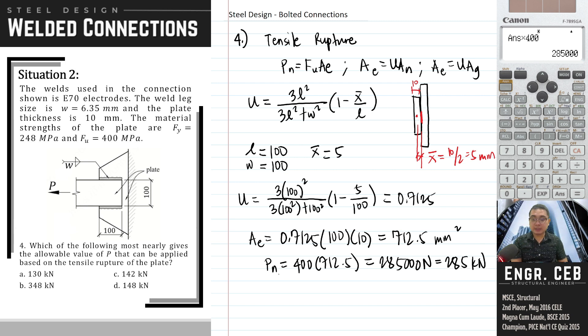So with that, we can now compute the allowable value of the force. We compare the demand versus the capacity. So the demand based on the figure is P, and then the capacity, based on the problem, we are solving for the allowable value, so we will use ASD.